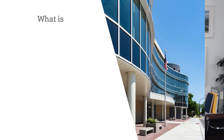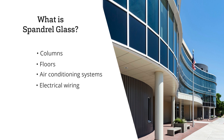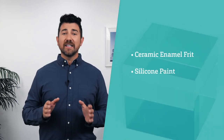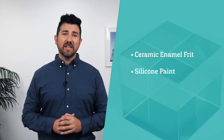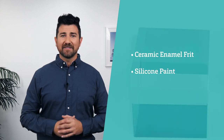Spandrel glass serves to conceal building components such as columns, floors, air conditioning systems, electrical wiring, or plumbing. Spandrel glass is typically located next to vision glazing. Spandrel opacification is typically achieved with ceramic enamel frit or silicone paint.